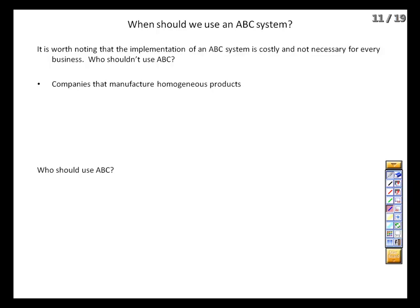But say we make donut holes, some filled or some not. Or we make 10 varieties of golf balls, all going through essentially the same production system with just different raw materials. In those cases, even if we used multiple drivers, we'd probably find ourselves applying overhead in pretty much the same proportions. Smaller companies may not be able to afford an ABC system. And companies with little-to-no overhead would get little from an ABC system — if overhead is trivial, how we go about allocating it is a non-issue.